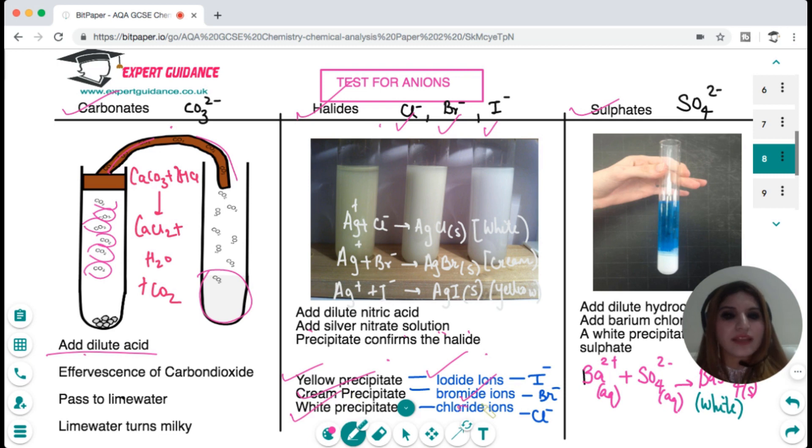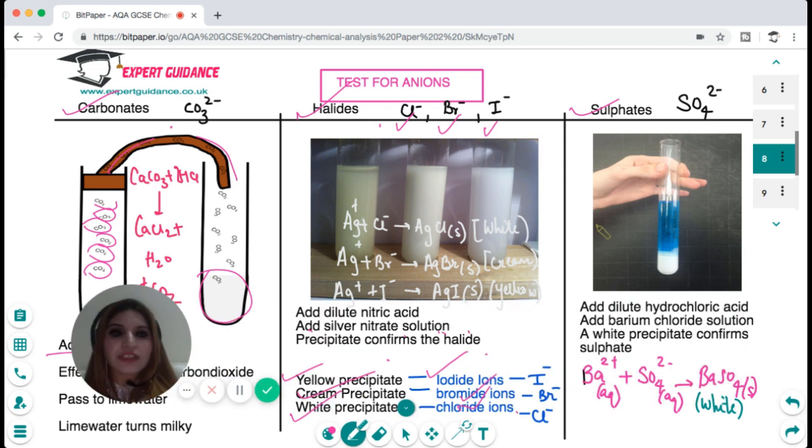For the test of sulfate we add dilute hydrochloric acid and then add barium chloride solution and see a white precipitate. Why is there a white precipitate? Because barium and the sulfate ions combine to form barium sulfate which gives a white precipitate. You should know all these ion tests and how we perform them.